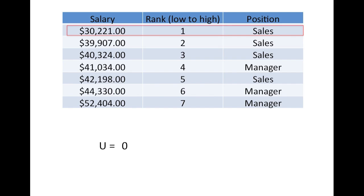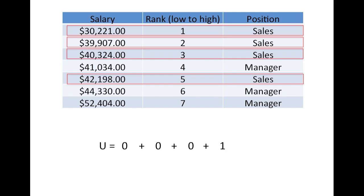So, let's go through our data. For the lowest-ranked salesperson, there are no managers that rank lower, so we have zero. For the next lowest-ranked salesperson, again, no lower-ranking managers, so zero. And same for the next lowest-ranked salesperson, zero. However, for the next salesperson, there is one manager that ranks below them in salary, so we have one there. That's all of our data for salespeople, so we add up all of these for a total of one. And this is our U statistic, just one. That's all it is. Very simple.